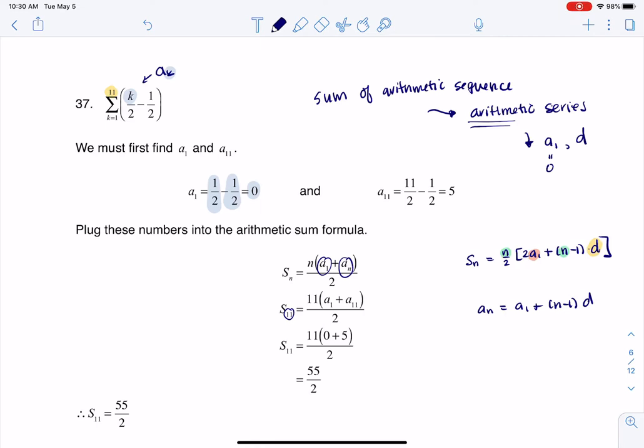Now I also went and I found A sub 11. So now I'm going to put an 11 in this place. And you see me putting an 11 there. And when I crunch that number, I get that A sub 11 is five. So rolling into this formula, I know A sub 1 is zero and A sub 11 is five.